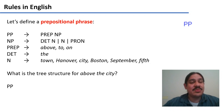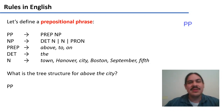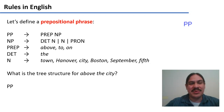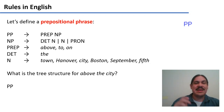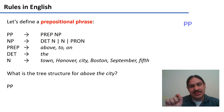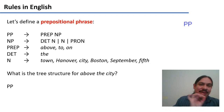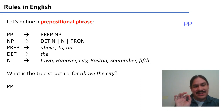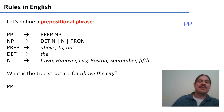We have rules for noun phrases: a noun phrase has the non-terminals determiner and noun, or just noun, or pronoun. The abstract determiner non-terminal goes to the terminal 'the.' The abstract noun non-terminal goes to the terminals 'town,' 'Hanover,' 'city,' 'Boston,' 'September,' 'fifth.'